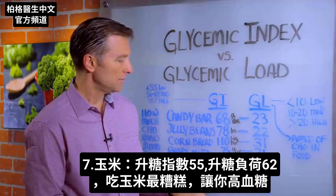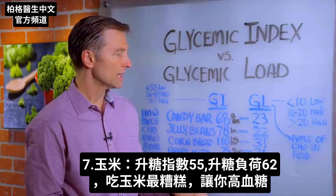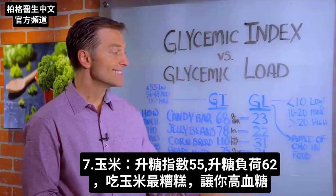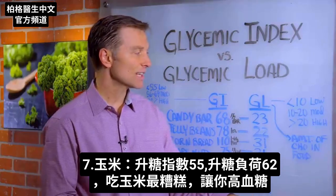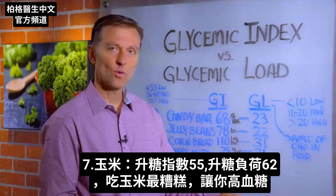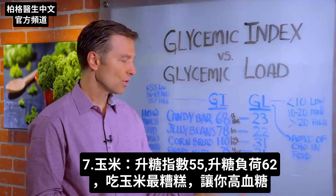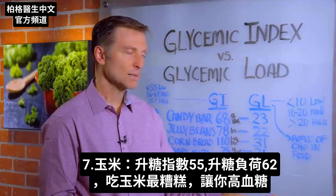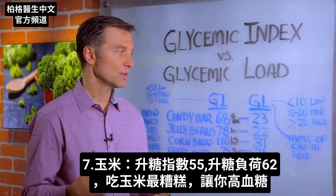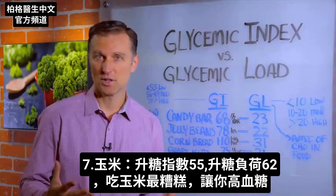Look at corn: 55 on the glycemic index, but 62 on the glycemic load. So corn is one of the worst things you could possibly eat, especially related to your blood sugars.